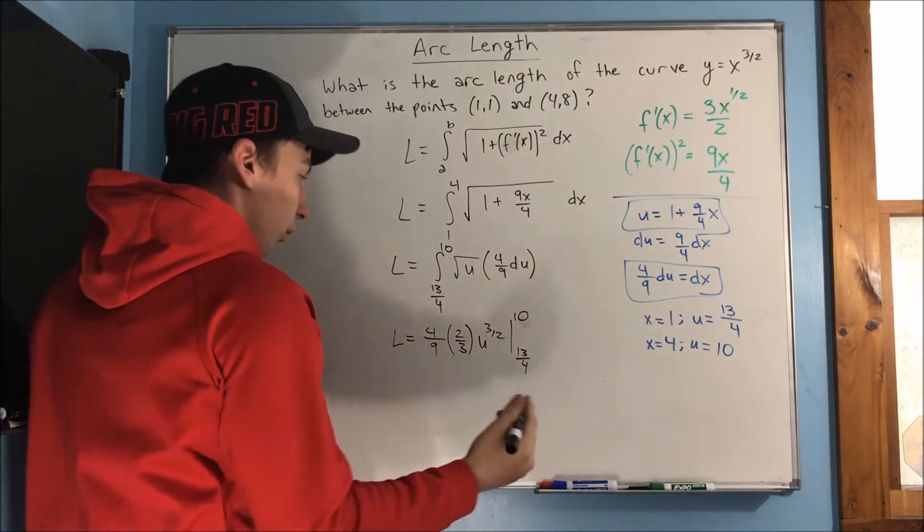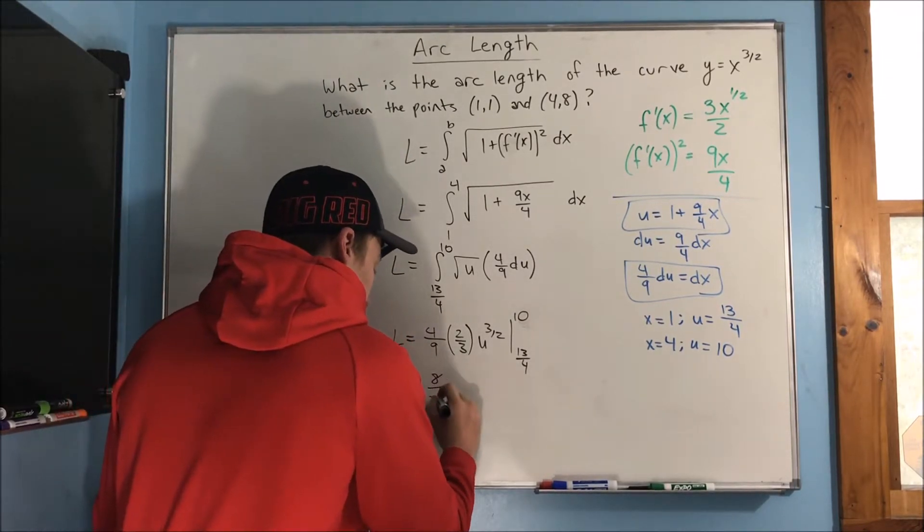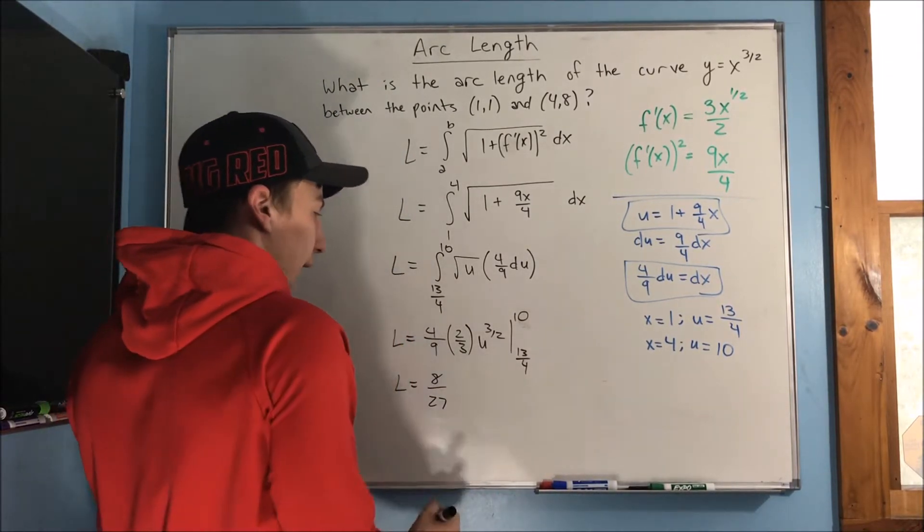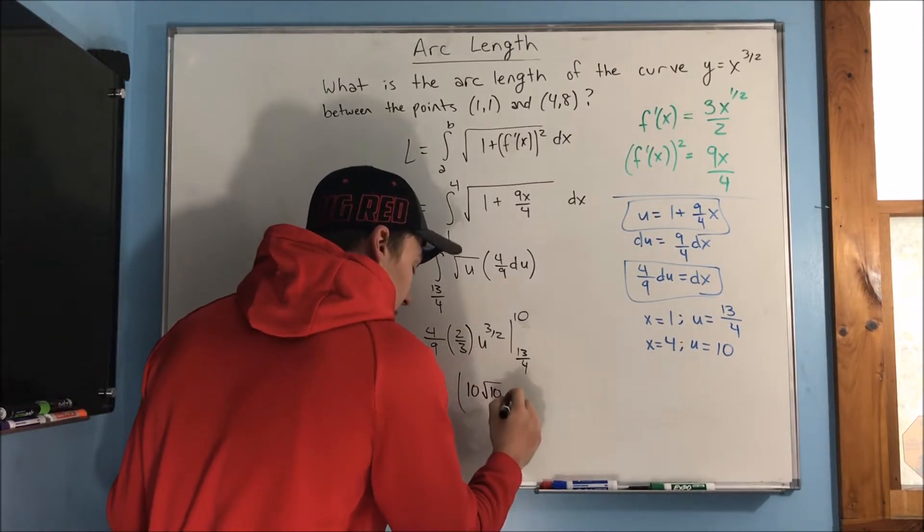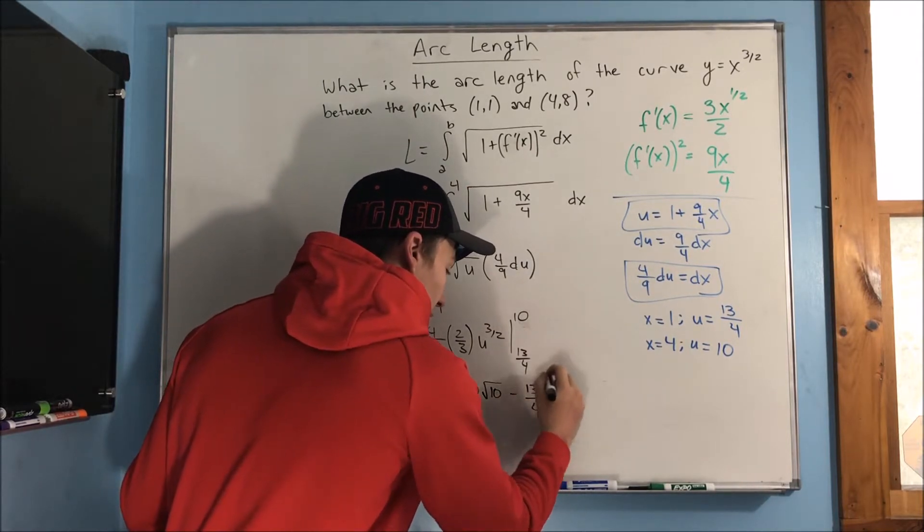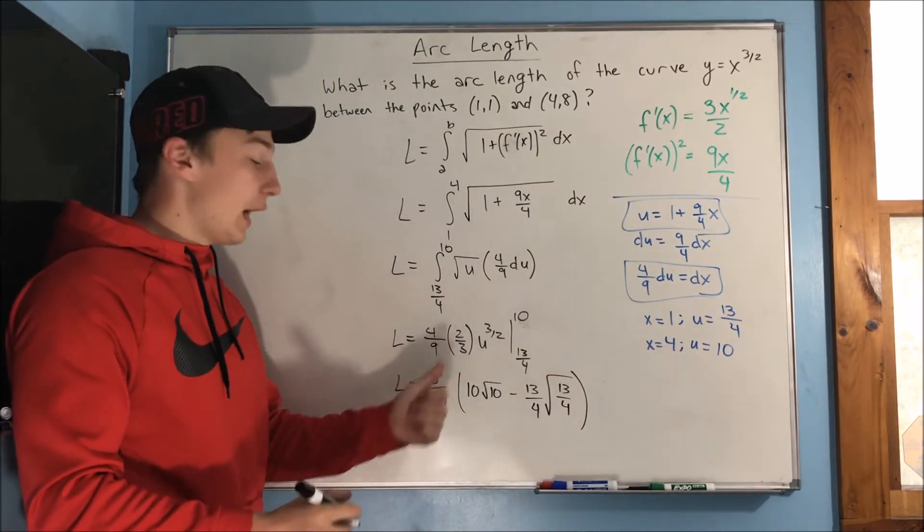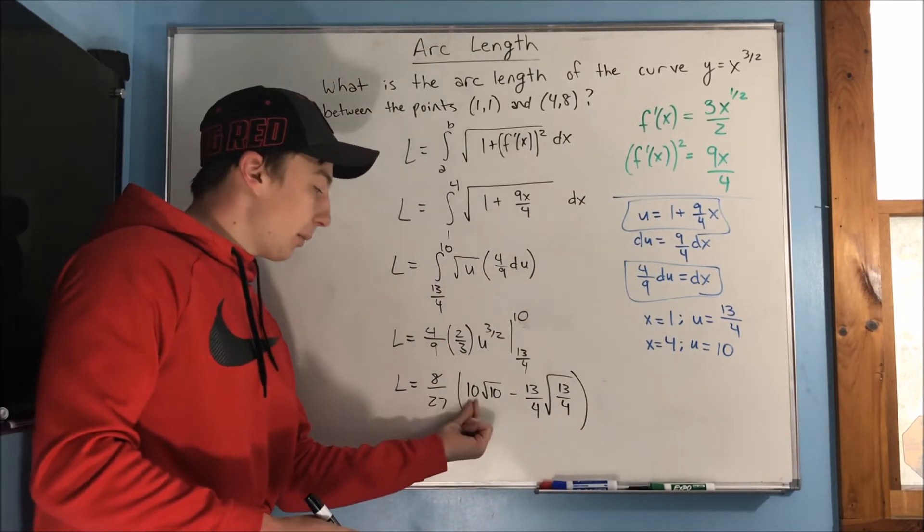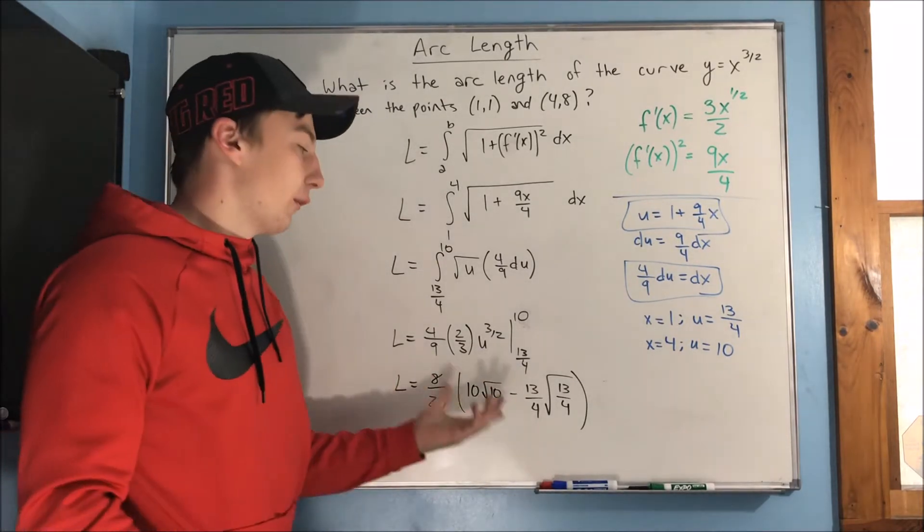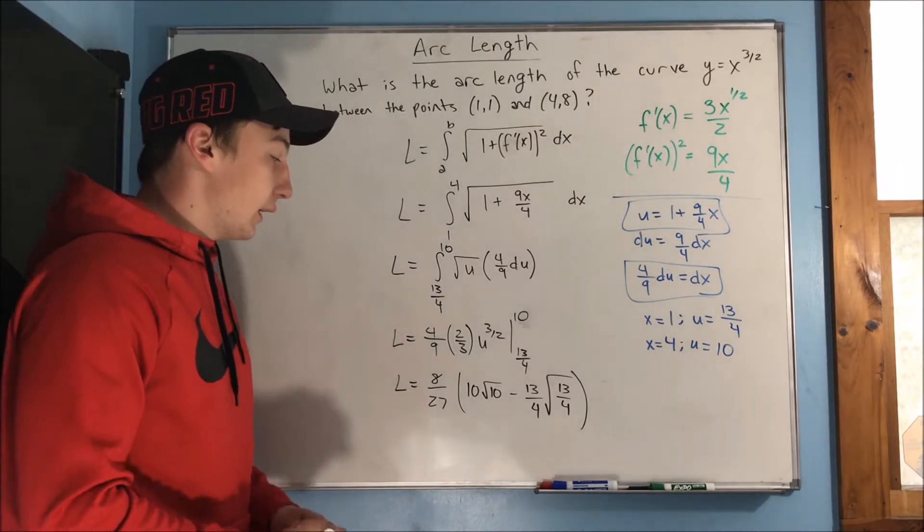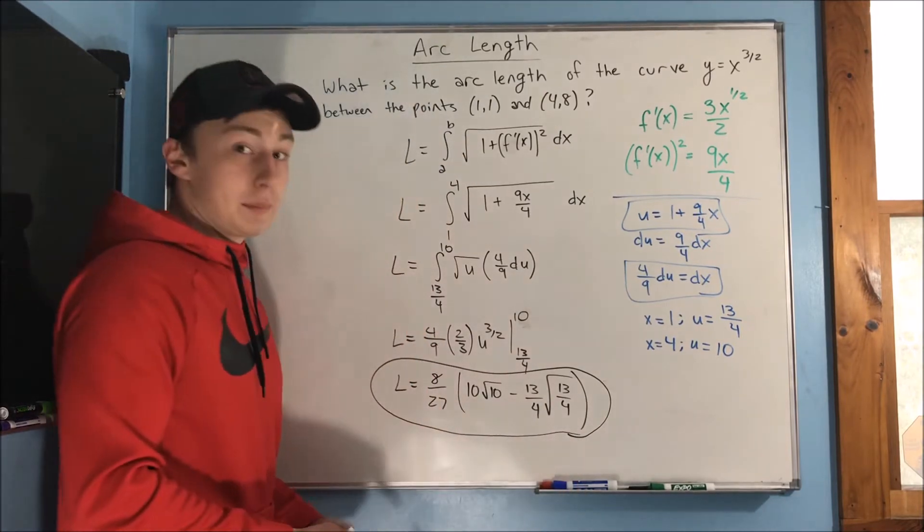Alright, so we can evaluate now. We get the arc length is equal to 8 over 27. We have that u to the 3 halves to take care of, so that's going to be 10 rad 10 minus 13 over 4 rad 13 over 4. Whenever you have something to the 3 halves, right, it's just that number rad that number. So if that's, you know, if you're wondering how I did this so fast, that's what it is.